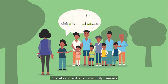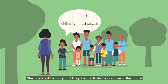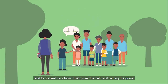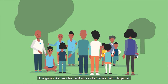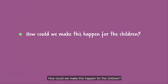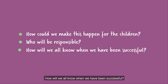She tells you and other community members that most of the children are playing on rough ground and often injure themselves. She wonders if the group could help them to fill dangerous holes in the ground and to prevent cars from driving over the field and ruining the grass. The group likes her idea and agrees to find a solution to present to the other community members. You could facilitate the process by asking open questions such as: how could we make this happen for the children? Who will be responsible for what? How will we all know when we have been successful?